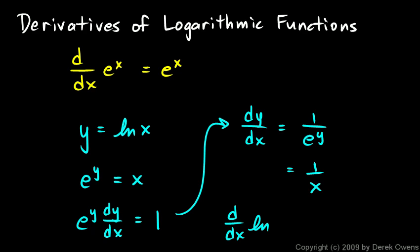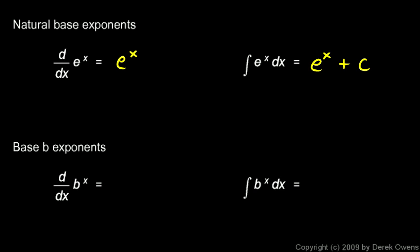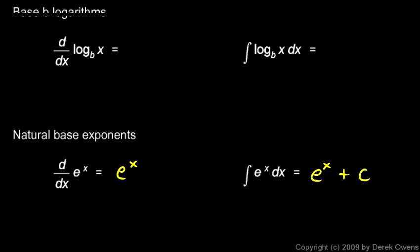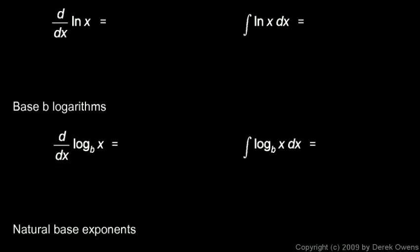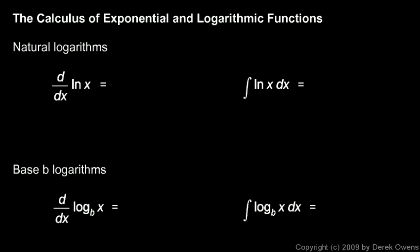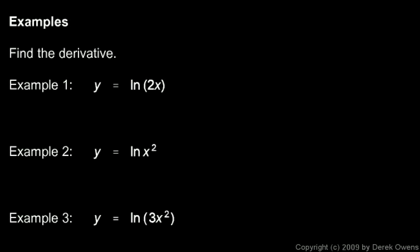To sum it up: the derivative of the natural log function is one over x. Coming back to the reference sheet, at the top it confirms the derivative of ln(x) is one over x. Now let's do some examples with this concept.